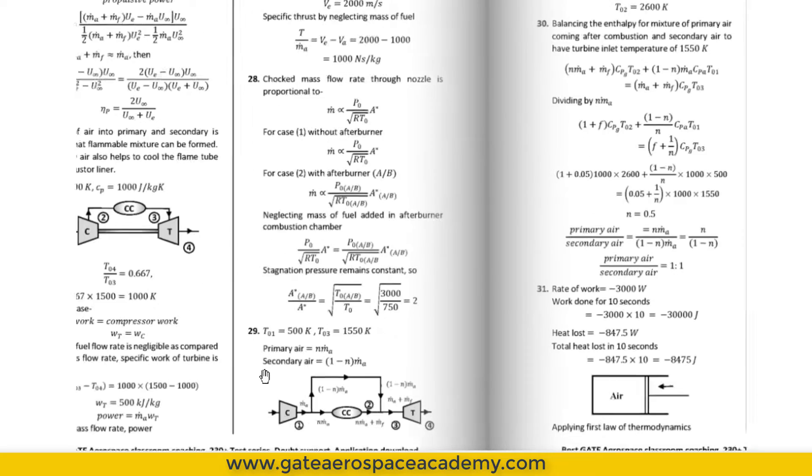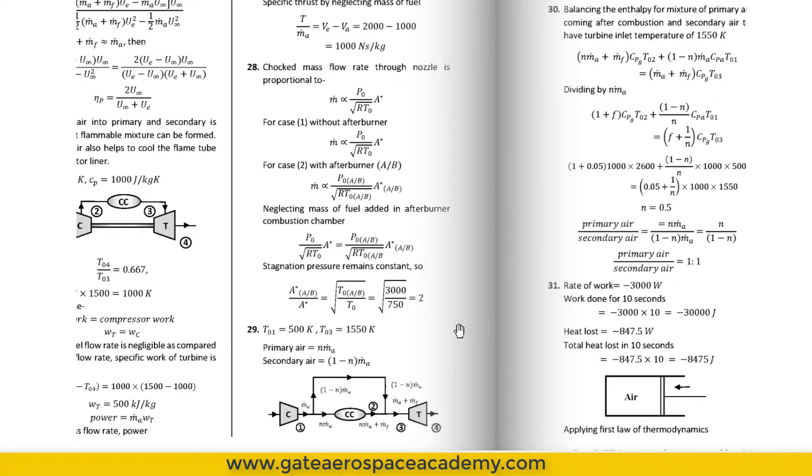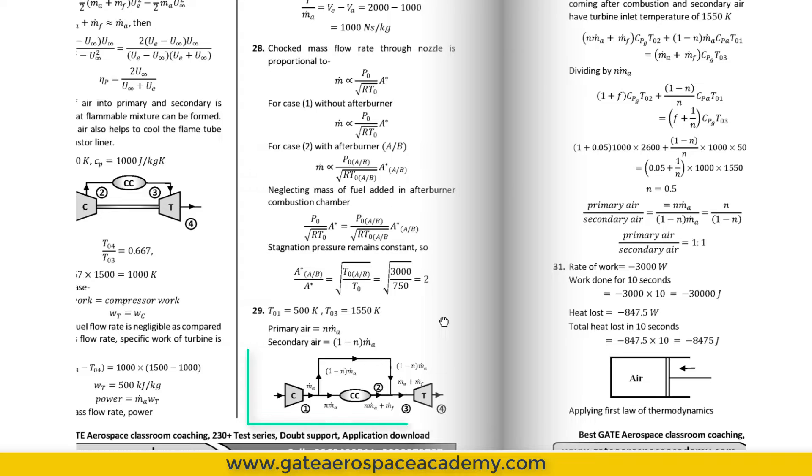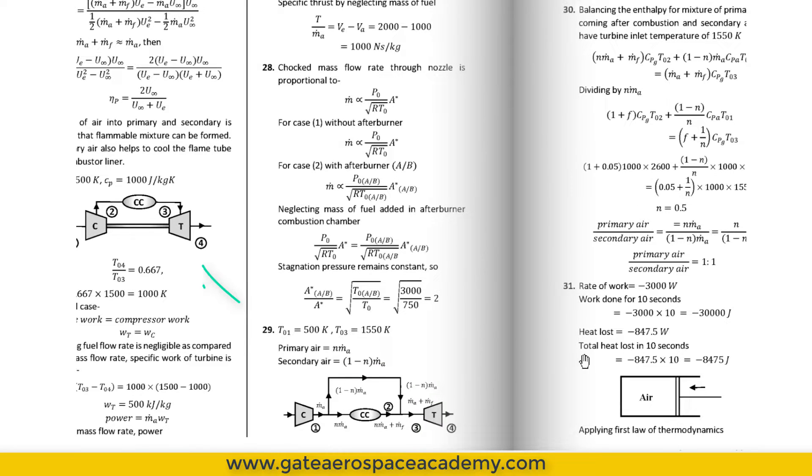One of the best things about this book is amazing schematic diagrams. Like this is the diagram of bypassing the air around the combustion chamber, where air is divided into two streams, primary and secondary. This is schematic diagram of gas turbine.